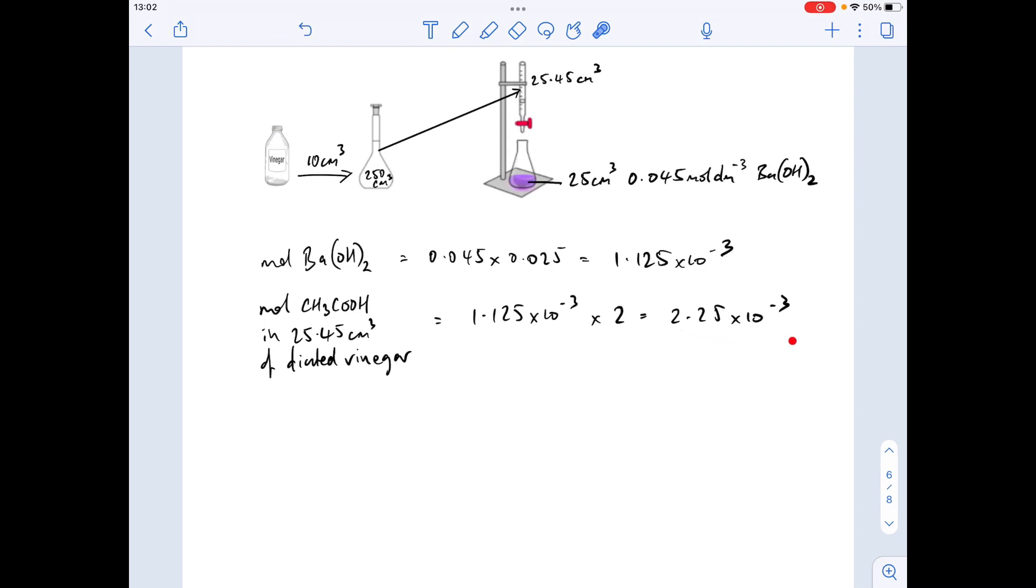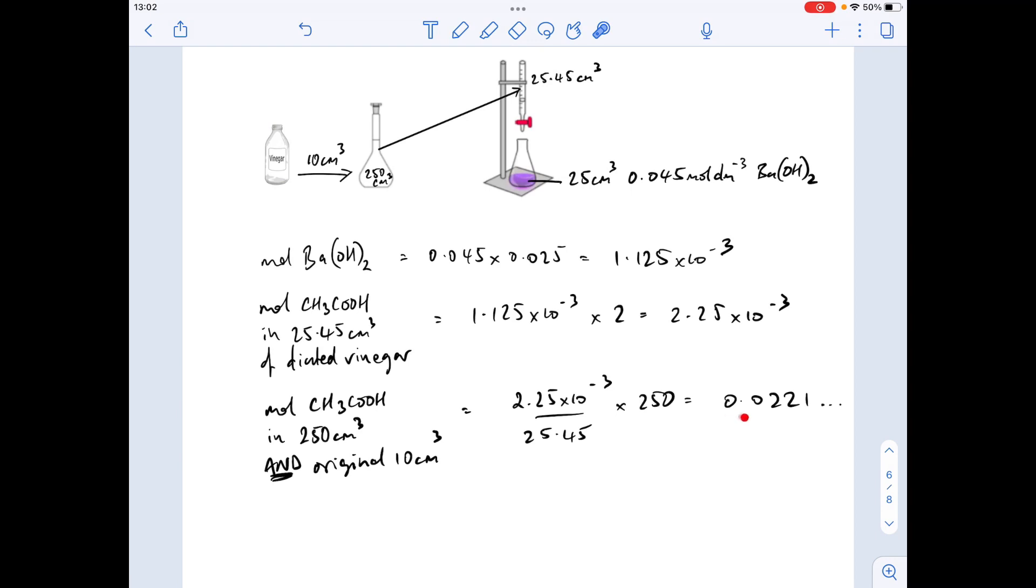So the way we do that is we divide the moles by the volume that they're in. So divided by 25.45 tells us how many moles must have been in one cubic centimeter. Multiply by 250, and then that's telling us how many moles of ethanoic acid must have been in there. But remember it's the same as the number of moles in there. So to three significant figures, that's coming out at 0.0221. I'm keeping the full number in the calculator, hence those dots there.